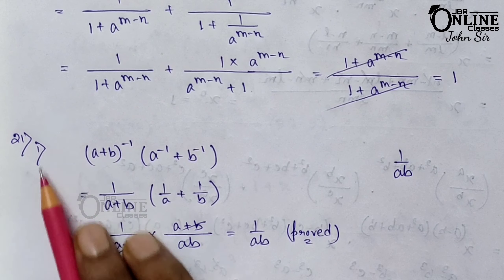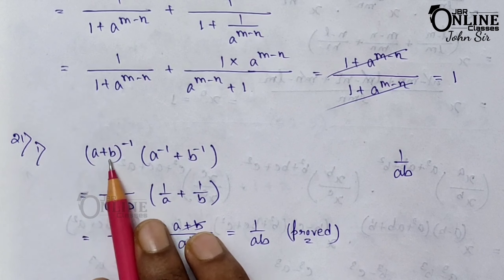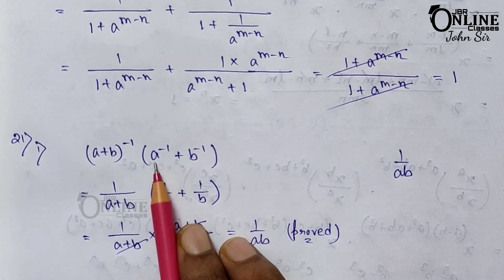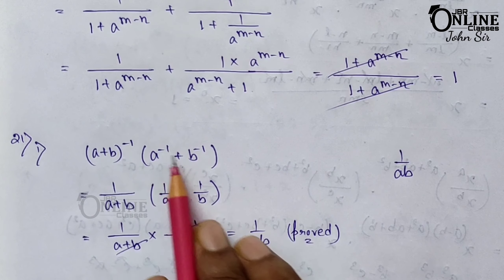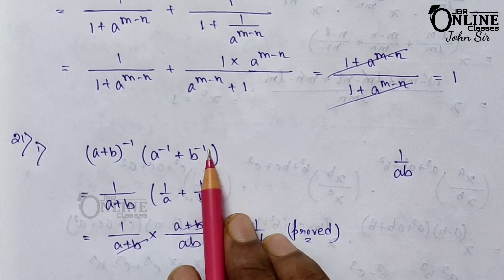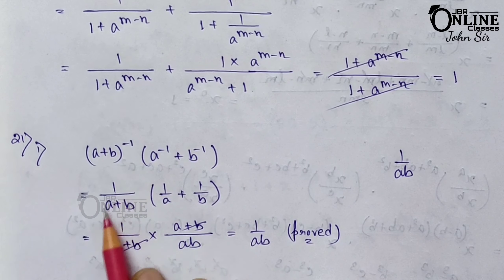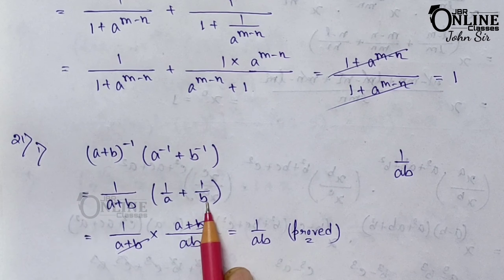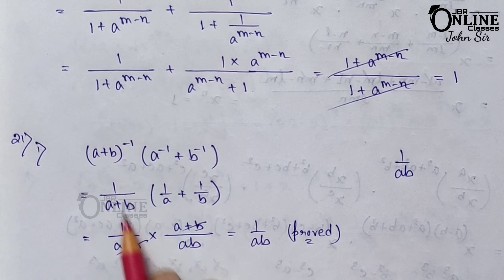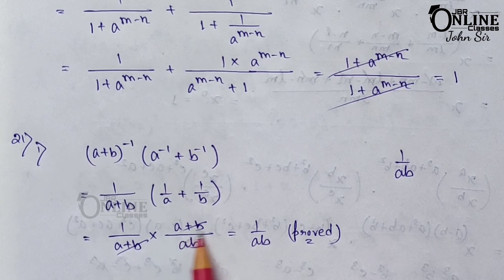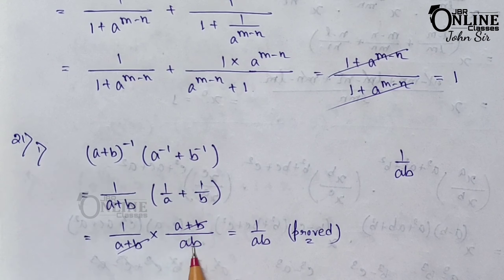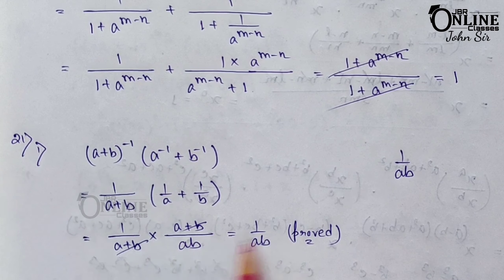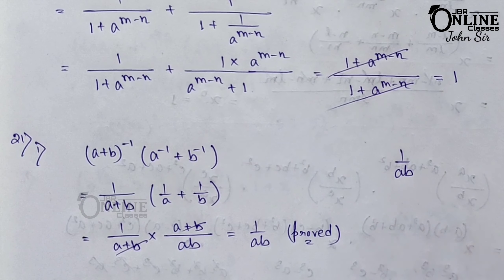Sum 21.1 (prove): (a+b)^(−1) × (a^(−1) + b^(−1)). Rewrite as 1/(a+b) × (1/a + 1/b). After LCM, 1/a + 1/b = (a+b)/ab. So (1/(a+b)) × ((a+b)/ab) — (a+b) cancels — giving 1/(ab). Proved.